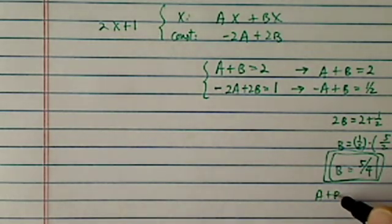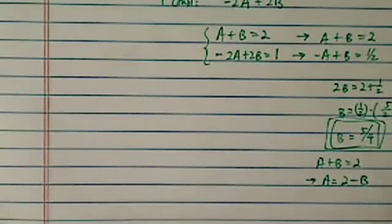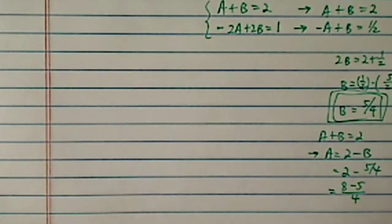Since A plus B is equal to 2, we have A is equal to 2 minus B. Since I know what B is, 5 over 4, I have 8 minus 5 over 4.